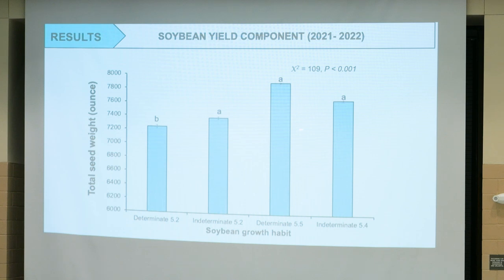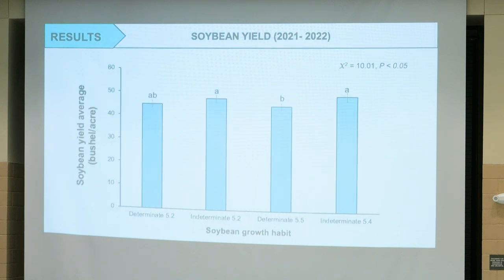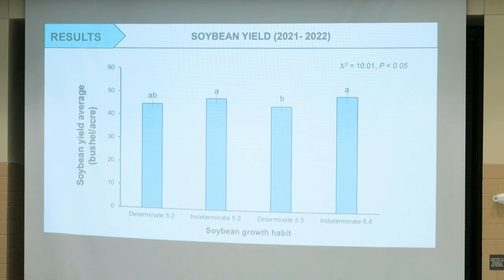When we look at total seed weight, we see the same effect — differences by variety, not by growth habit. And for overall yield, different varieties yield differently, but it's not a consistent effect by growth habit. So we're not seeing a consistent effect on yield or yield compensation from earworm feeding based on growth habit.